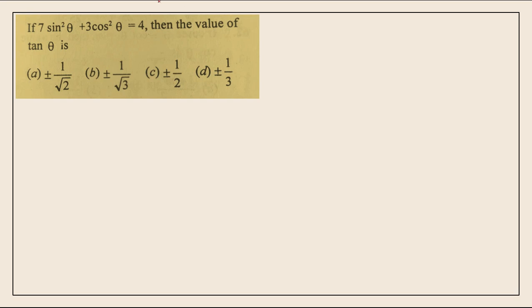If 7sin²θ plus 3cos²θ equals 4, then find the value of tanθ. We have 4 options: plus or minus 1 by root 2, plus or minus 1 by root 3, plus or minus 1 by 2, or plus or minus 1 by 3.